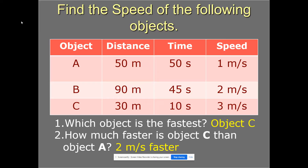In your calculations, object A travels at roughly one meter per second. Object B: 90 divided by 45 equals two meters per second. Object C averages three meters per second. The formula is distance divided by time. Object C is the fastest at three meters per second versus two for B and one for A. To find how much faster C is than A, subtract: three minus one equals two meters per second faster for object C.